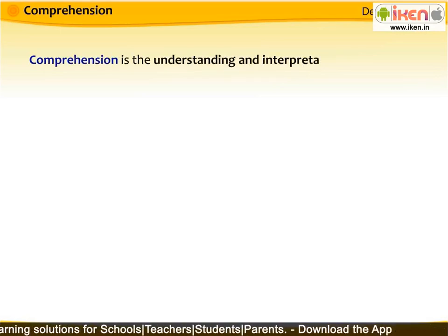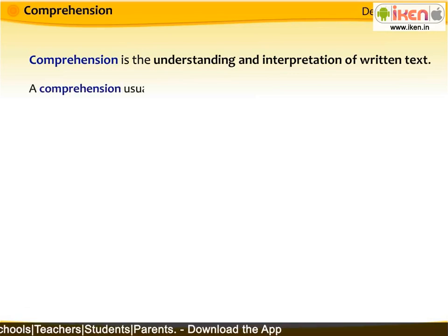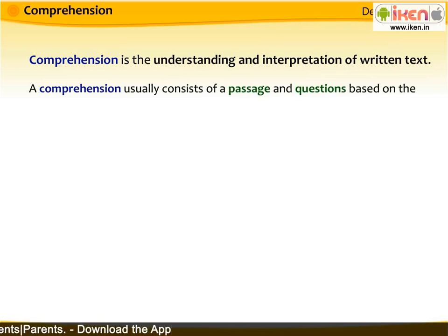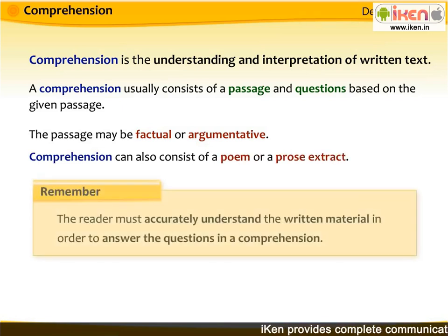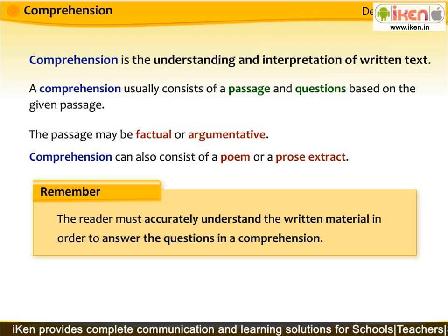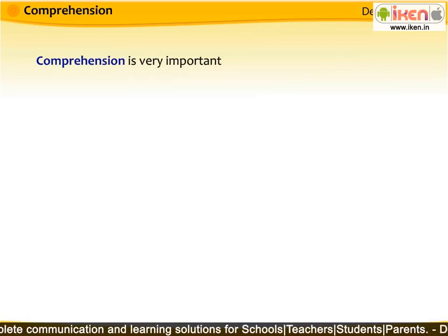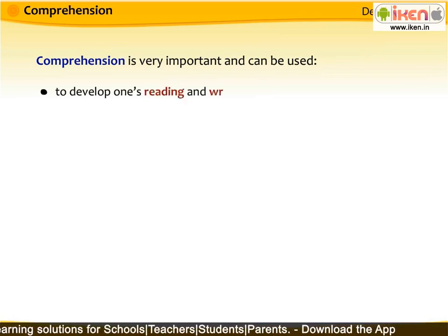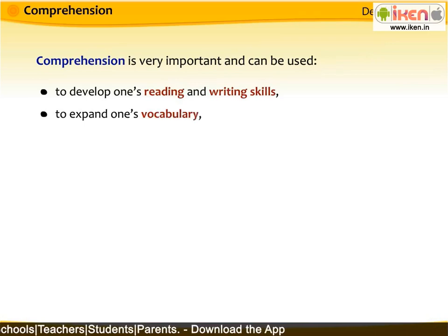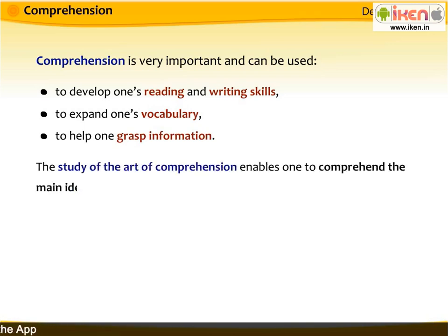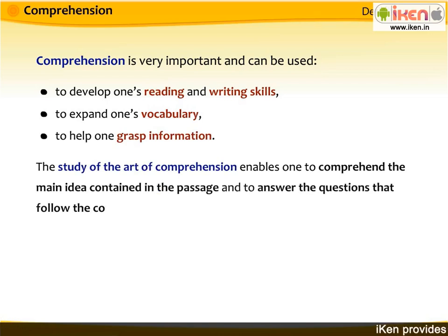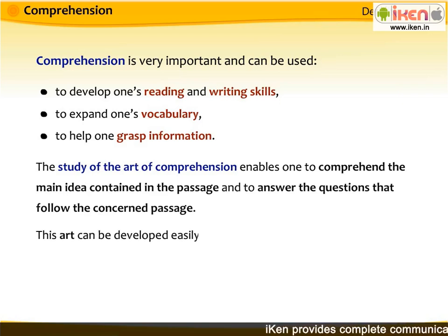Comprehension is the understanding and interpretation of written text. A comprehension usually consists of a passage and questions based on the given passage. The passage may be factual or argumentative in nature. Comprehension can also consist of a poem or a prose extract. The reader must accurately understand the written material in order to answer the questions in a comprehension. The study of the art of comprehension enables one to comprehend the main idea contained in the passage and to answer the questions that follow. This art can be developed easily through diligent practice.